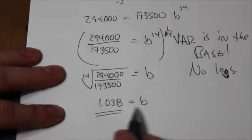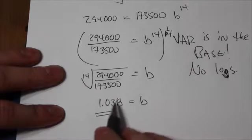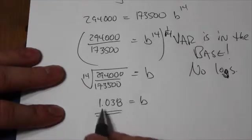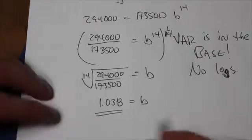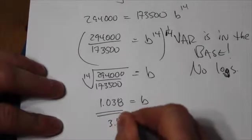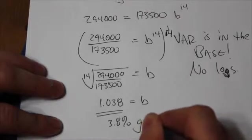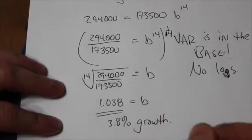And what that tells me is that my base here is 3.8 percent larger than 1, so this is growth. Because the base here is larger than 1, that's going to be growth, and that is going to be 3.8 percent growth annually.